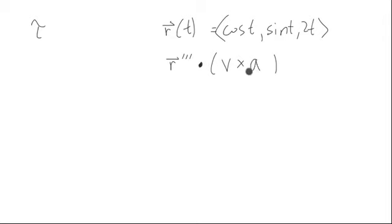So we have R double prime which is A. So basically we're dividing by just the length of V cross A squared. If you remember in that formula, it was R prime cross R double prime, and then we were finding that length and squaring it.